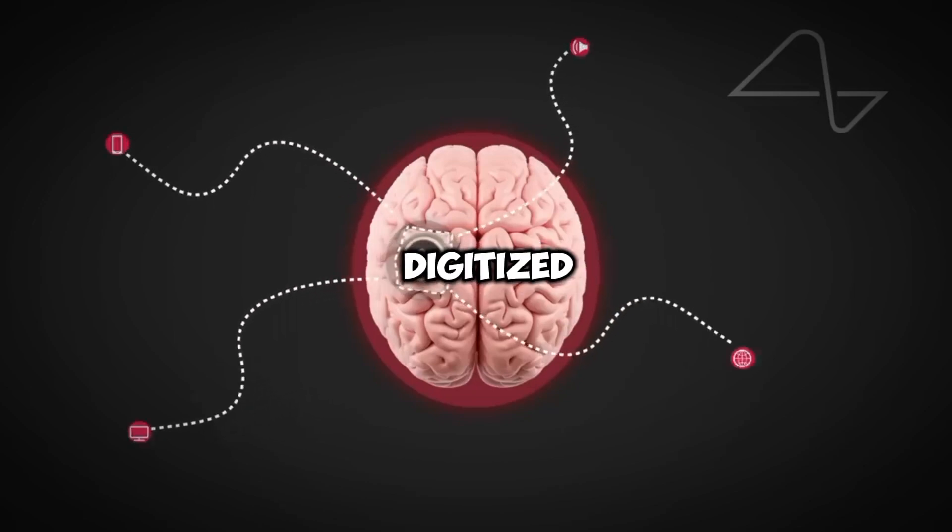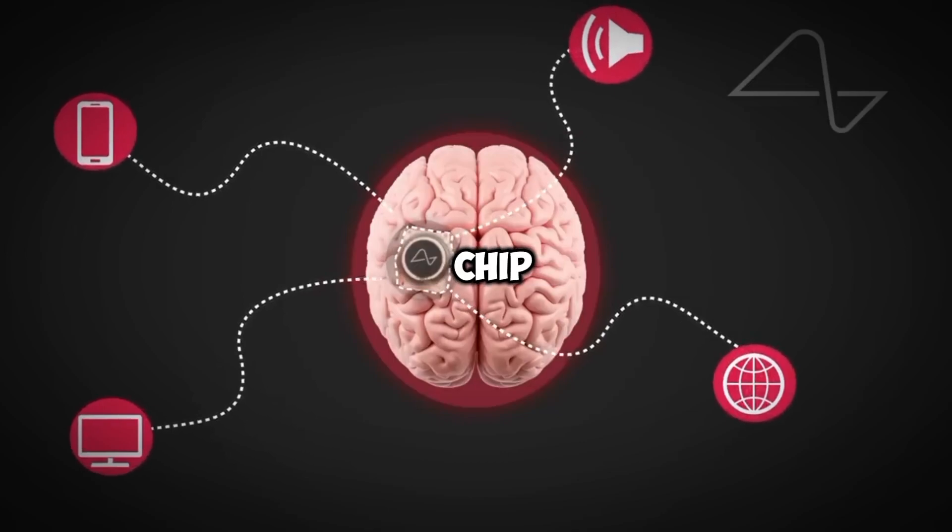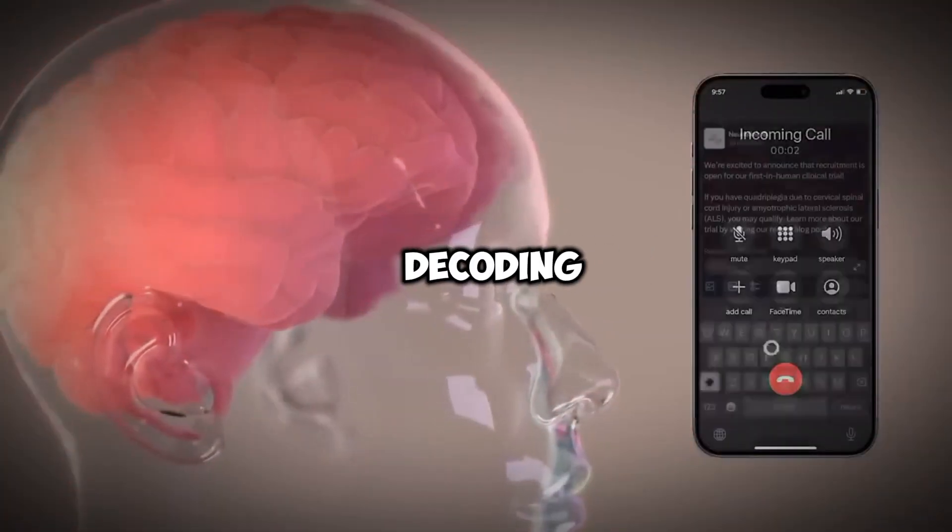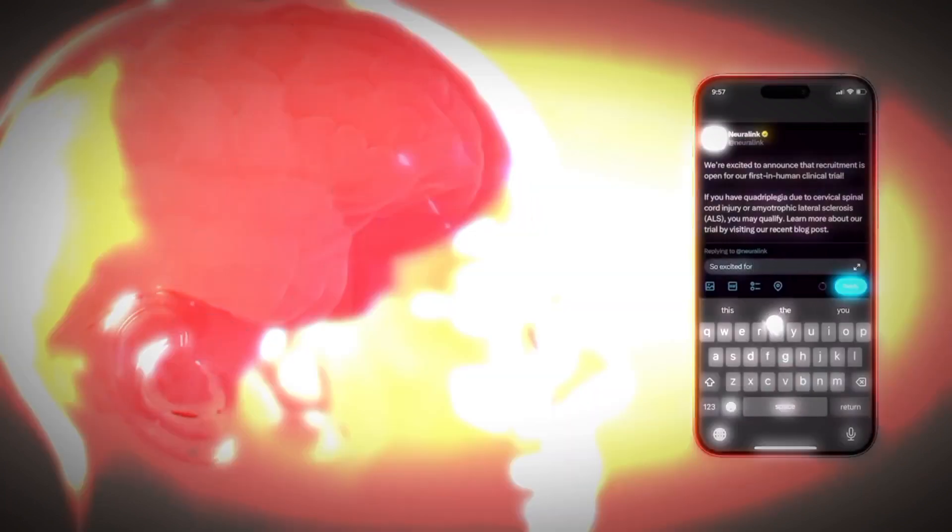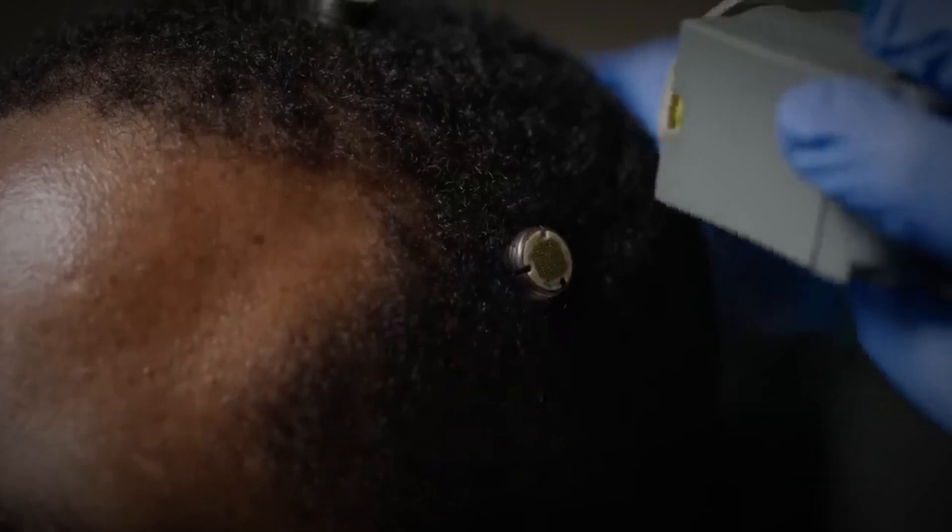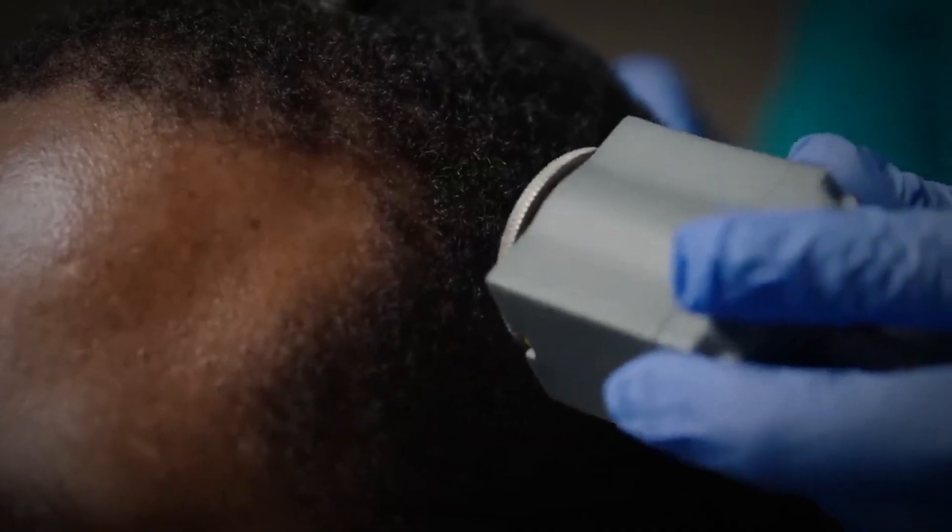These signals get amplified, digitized and relayed by the chip to an external wireless receiver like a smartphone. Custom decoding algorithms then translate the data into commands to operate phones, keyboards, wheelchairs, any bluetooth paired device, just by thinking about the action.